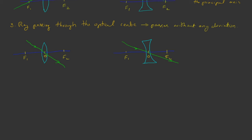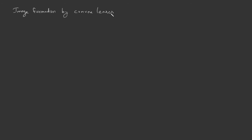Now we are going to study image formation of a convex lens at different positions of the object, and study the image characteristics. We will cover six types of image formation based on the position of the object.